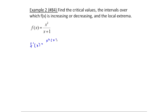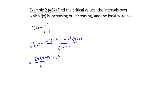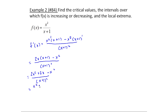Since this is a rational function, I'll use the quotient rule to find f prime of x — writing the product twice with subtraction in between, divided by the denominator squared. This gives 2x times (x plus one) minus x squared times one, over (x plus one) squared. Simplifying: 2x squared plus 2x minus x squared gives x squared plus 2x, all over (x plus one) squared.